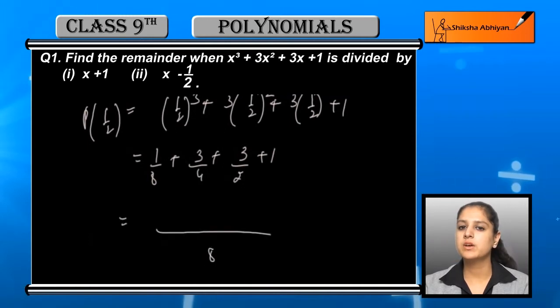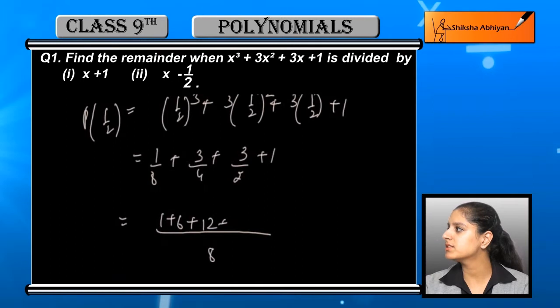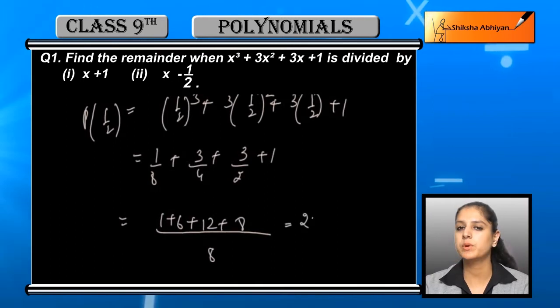The LCM of the denominators is 8, and in the numerators we have 1 + 6 + 12 + 8, which equals 27/8.